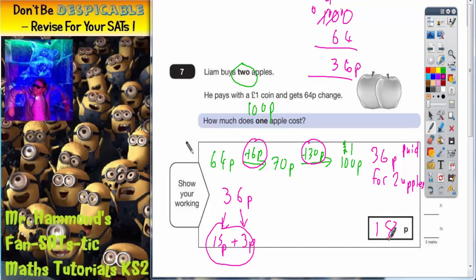So your final answer should be 18 pence. Just to double check. Stick it back in the question. So he buys 2 apples which are both 18 pence each. 2 18's makes you 36 pence.